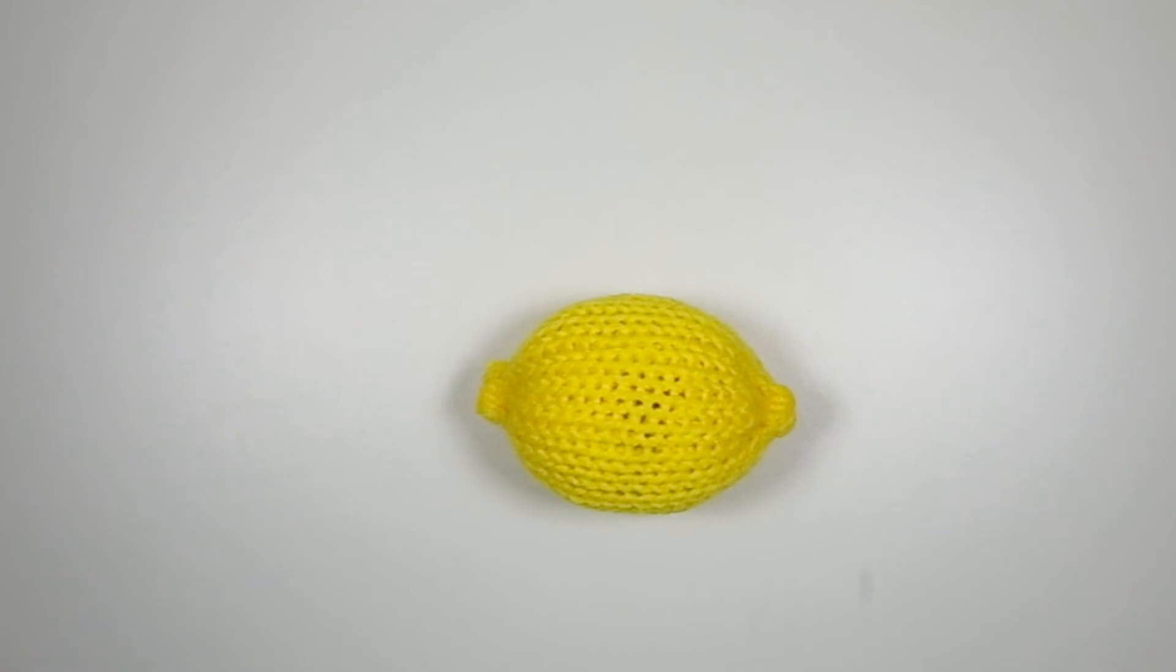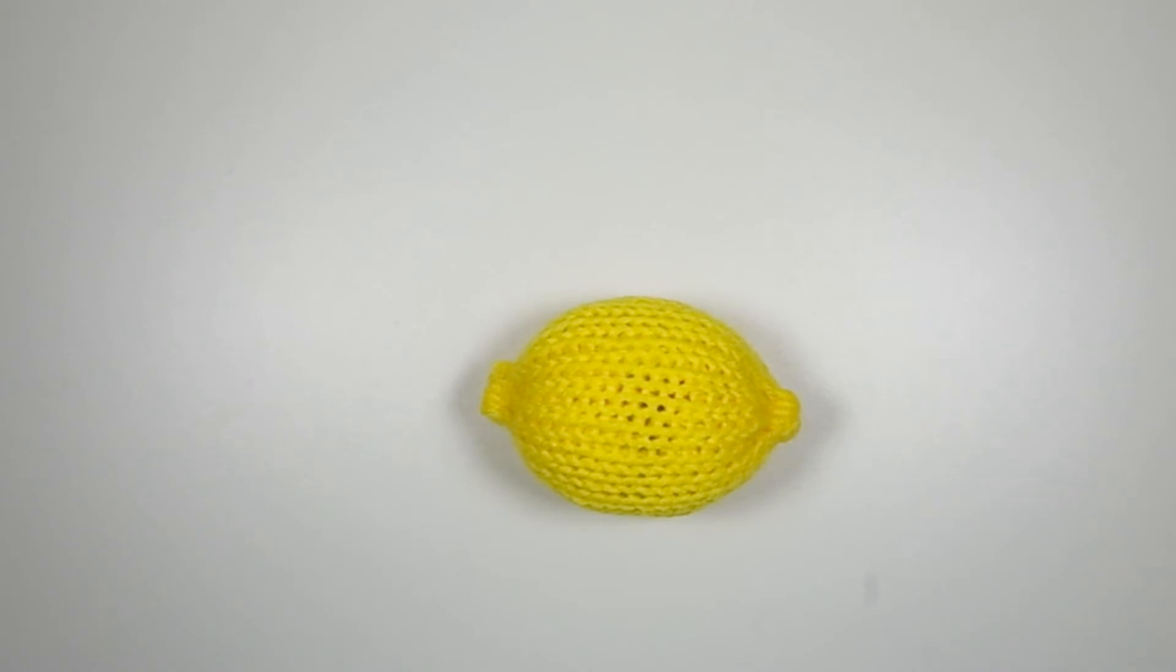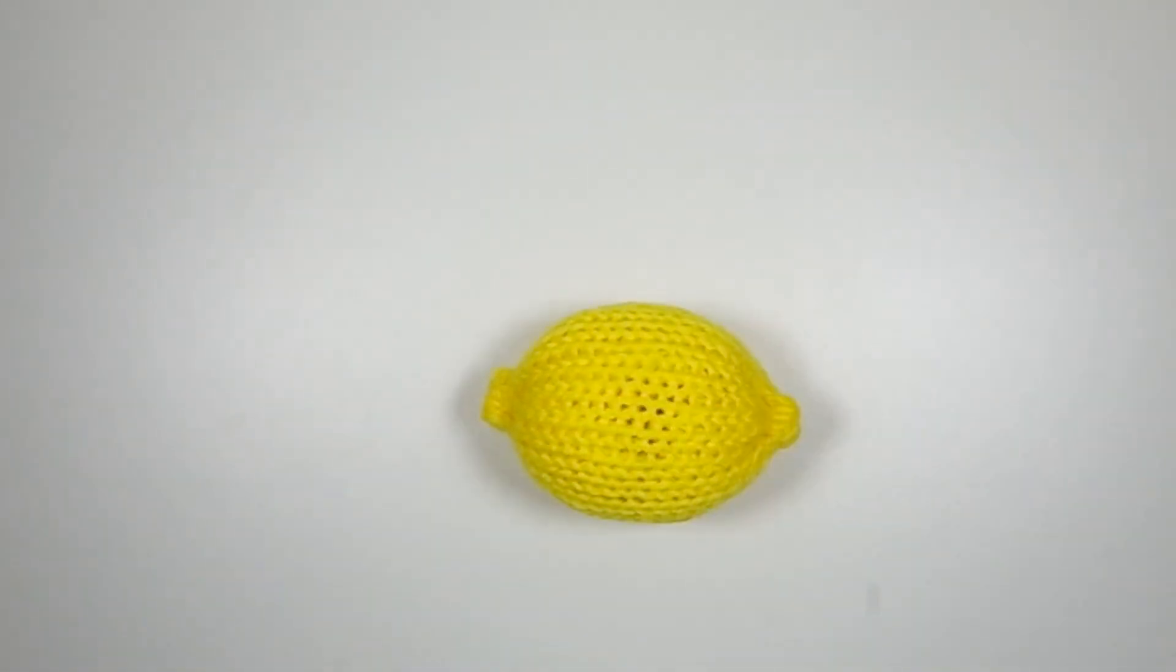So from a simple little knitted ball made on the Addy Pro, you now have a cute little knitted lemon. Now if your yarn scraps that you stuff your ball with are really dark, or show through too much, then you can always put two layers of knitting around the ball before you cover it in this last tube, and that will take care of that problem for you.